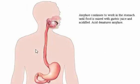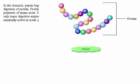Amylase continues to work in the stomach until food is mixed with gastric juice and acidified. Acid denatures amylase. In the stomach, pepsin begins the digestion of protein.